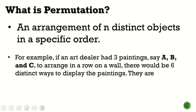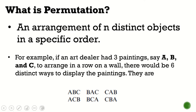For example, we have three paintings A, B, and C, and we want to arrange those three paintings in a row. These are the possibilities: we have ABC, BAC, CAB, ACB, BCA, and CBA. So in total, we have six possible arrangements.